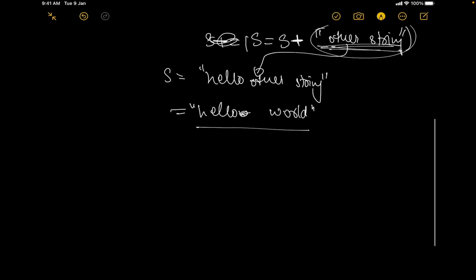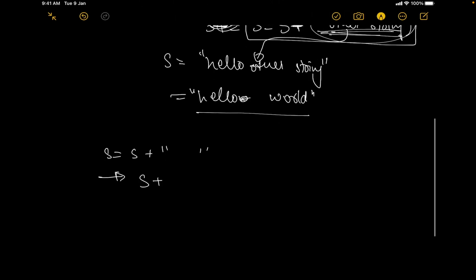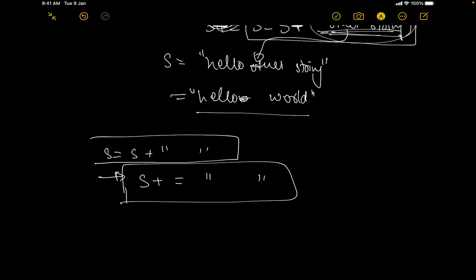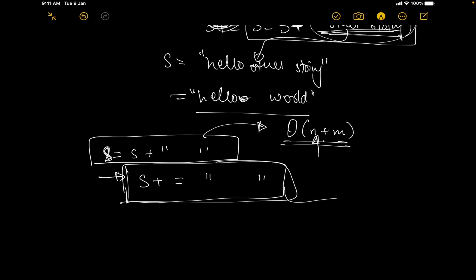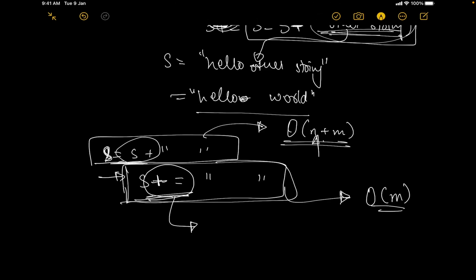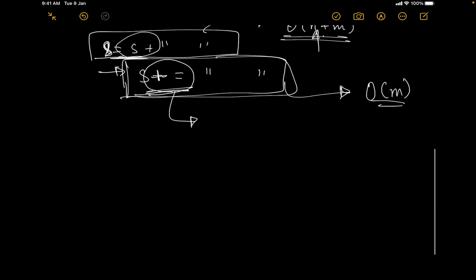Although it's not recommended to add strings using s = s + string. It's always advised to use s += whatever string you want to add. The reason is that s = s + string has complexity O(n + m) where n is the size of the string, whereas s += string reduces to O(m) because it's specially overloaded as an append operation. This is a tip a lot of people miss but it's really important when doing competitive programming.